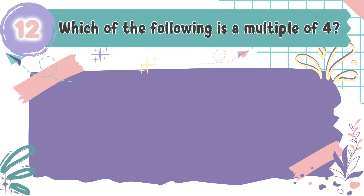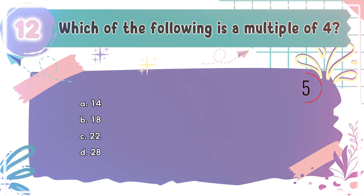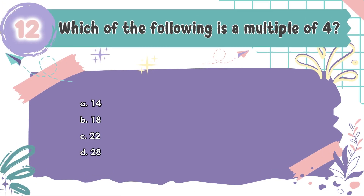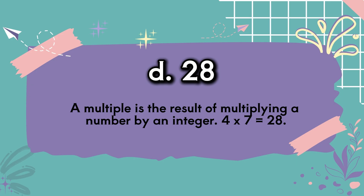Question number 12: Which of the following is a multiple of 4? The choices are A: 14, B: 18, C: 22, D: 28. The correct answer is D, 28. A multiple is the result of multiplying a number by an integer — 4 times 7 equals 28.